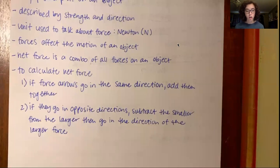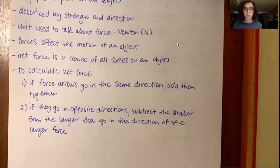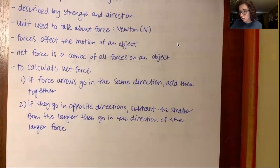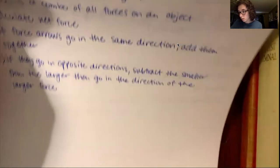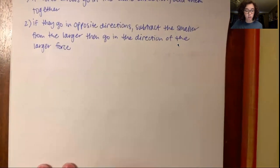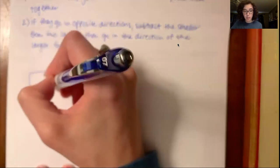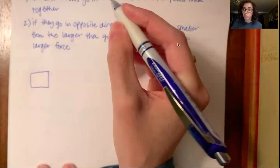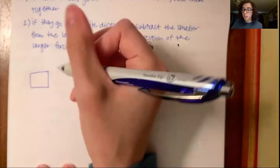So I'm about to draw a few examples to kind of show you what this looks like. Hopefully I can slide my paper up so that you can see. So this is just a nice little box here on the floor. Okay, so for the first example, if force arrows go in the same direction, add them together.